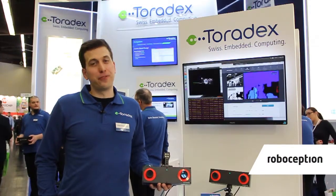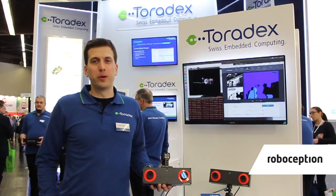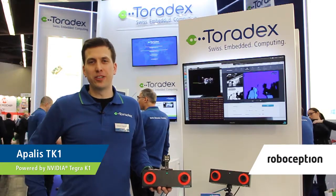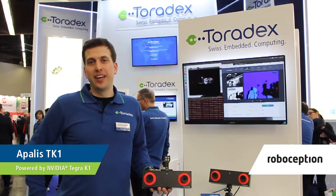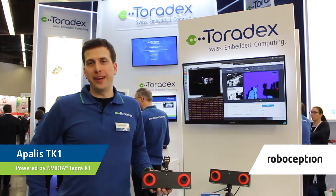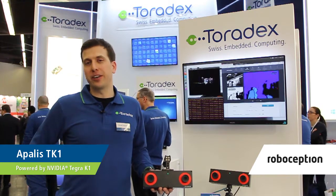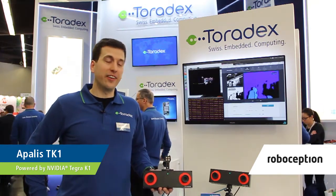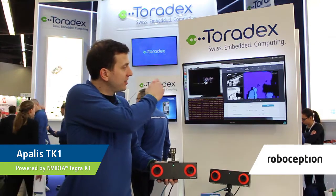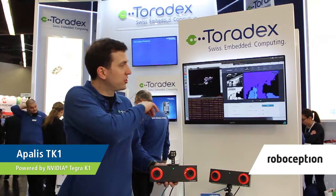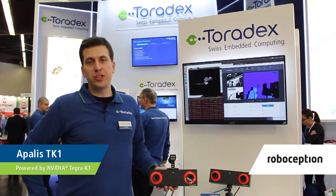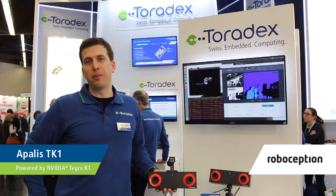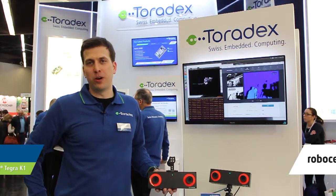This customer application from the company Roboception uses our Apalis TK1 module for a machine vision, 3D mapping, and object recognition application. What you see here in the back is a 3D image and a 3D depth map which they create with edge computing capability on the Apalis TK1 module.